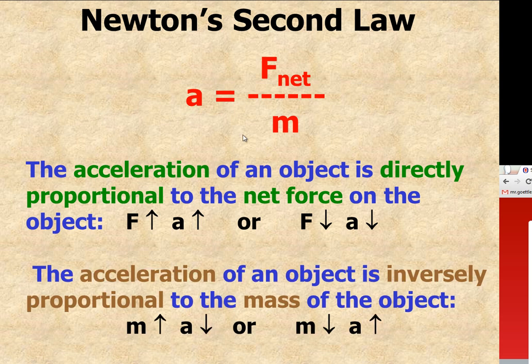Let's take a look at the relationship between mass and acceleration. The acceleration of an object is inversely proportional to the mass of the object. So if the mass of the object were to get bigger, its rate of acceleration would get smaller.